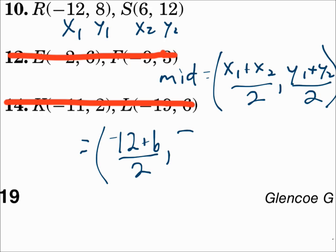Negative 12 plus 6 is negative 6, divided by 2 is negative 3. 8 plus 12 is 20, divided by 2 is 10. Negative 3, 10 is the midpoint.